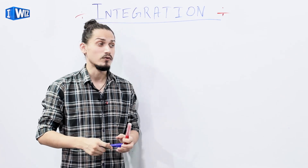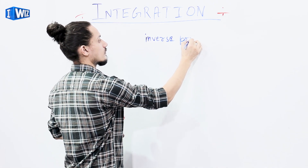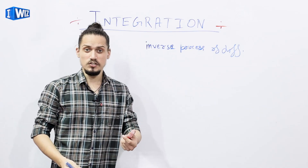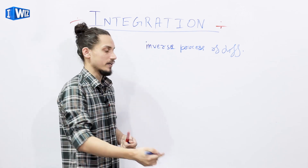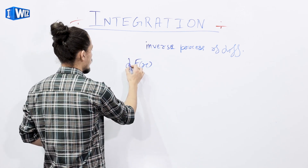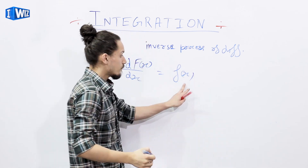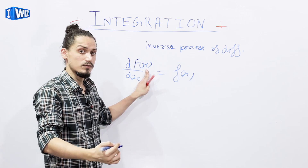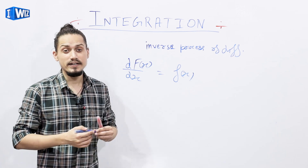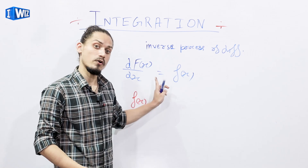Integration in simple words is the inverse process of differentiation. In differentiation we are given a function and we have to find its derivative — say f of x is the original function and we differentiate it with respect to x to get its derivative. In integration, we are given the derivative f of x and we have to find the original function.